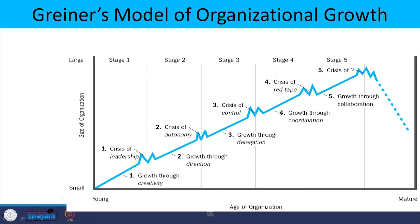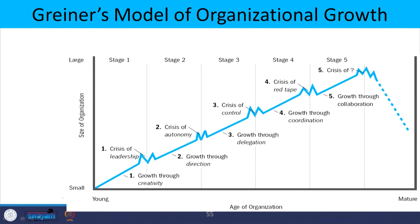The overall model shows that when an organization is young it is in the entrepreneurial stage. As it grows, there is growth through creativity with more openness and creativity emphasized. As it becomes larger in size, the leader becomes prominent and the founder exercises excessive control, leading to centralization and a crisis of leadership. Further, the need for delegation of power emerges, followed by growth through delegation, then coordination, and growth through collaboration.